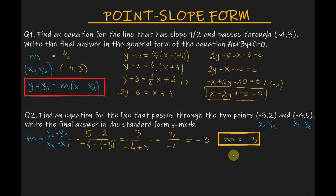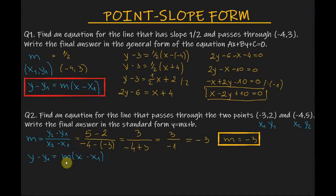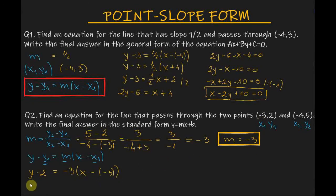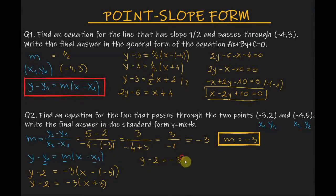Now we use the point-slope form to find the equation of the line: y minus y₁ equals m times x minus x₁. We have m, x₁, and y₁, so let's plug in the values. We have y minus 2 equals minus 3 times x minus minus 3, which gives y minus 2 equals minus 3 times x plus 3, so y minus 2 equals minus 3x minus 9.